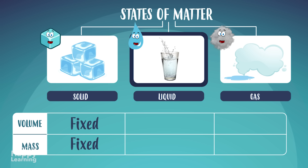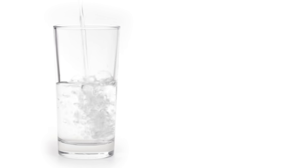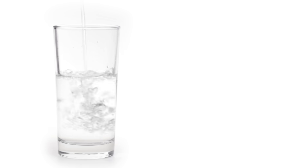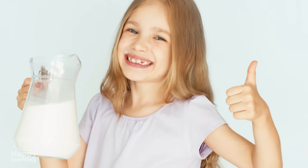Liquid state is characterized by having a fixed volume and variable size. Liquids take the container's shape, like this glass or jug.